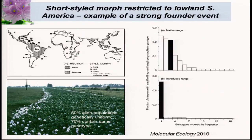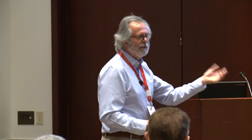Some recent work done by myself and colleagues in China looked at genotypic distribution of clones in the native range. It turns out in the introduced range, based on a fairly large global sample, 80% of introduced populations are genetically uniform, and 75% contain a single genotype. So there's been a massive bottleneck associated with this invasive spread.